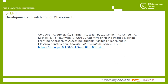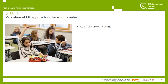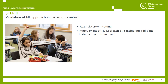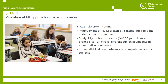In total, we considered this work a promising starting point and continued with the next step, in which we aim to validate the machine learning approach in a real classroom setting. This step was necessary as young adults — university students — might have developed certain classroom survival skills and are able to control their behavior in a better way, thus behaving differently compared with high school students. Additionally, we wanted to improve the machine learning approach by considering additional features, for example raising hands. In the scope of our second study, we were able to videotape 130 high school students across different grades and subjects, videotaping around 50 school hours — great material that allows us to investigate intra-individual comparisons and comparisons across subjects.